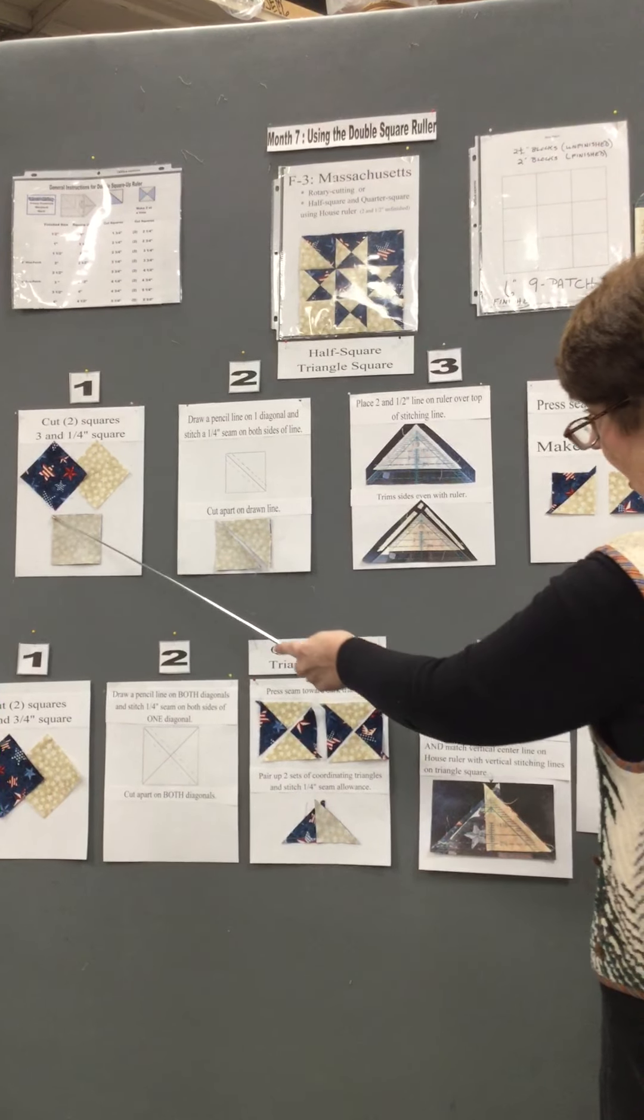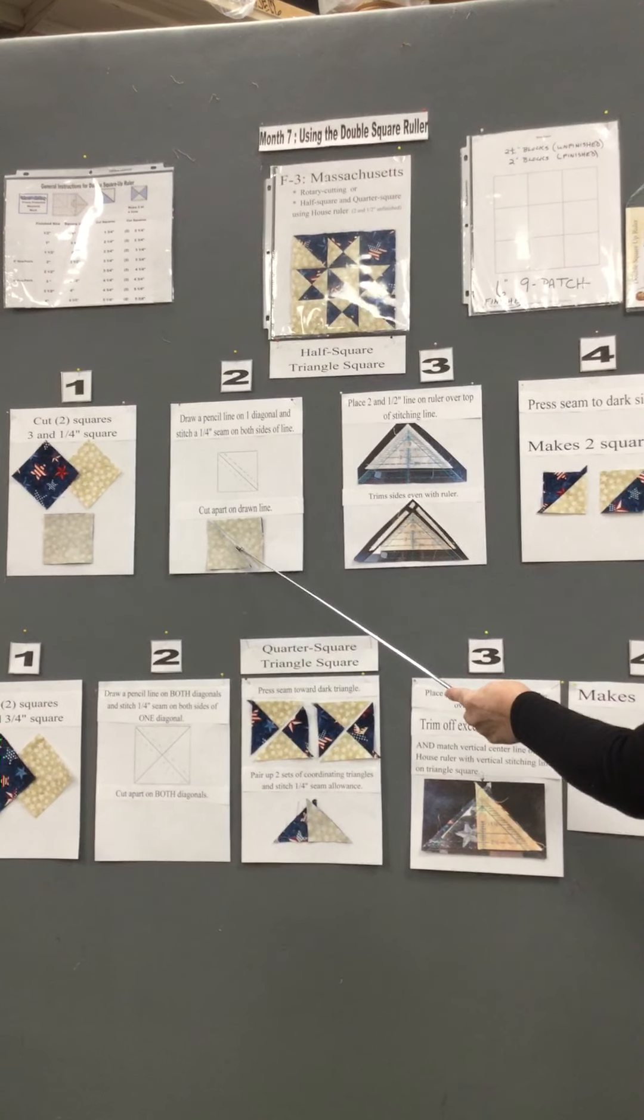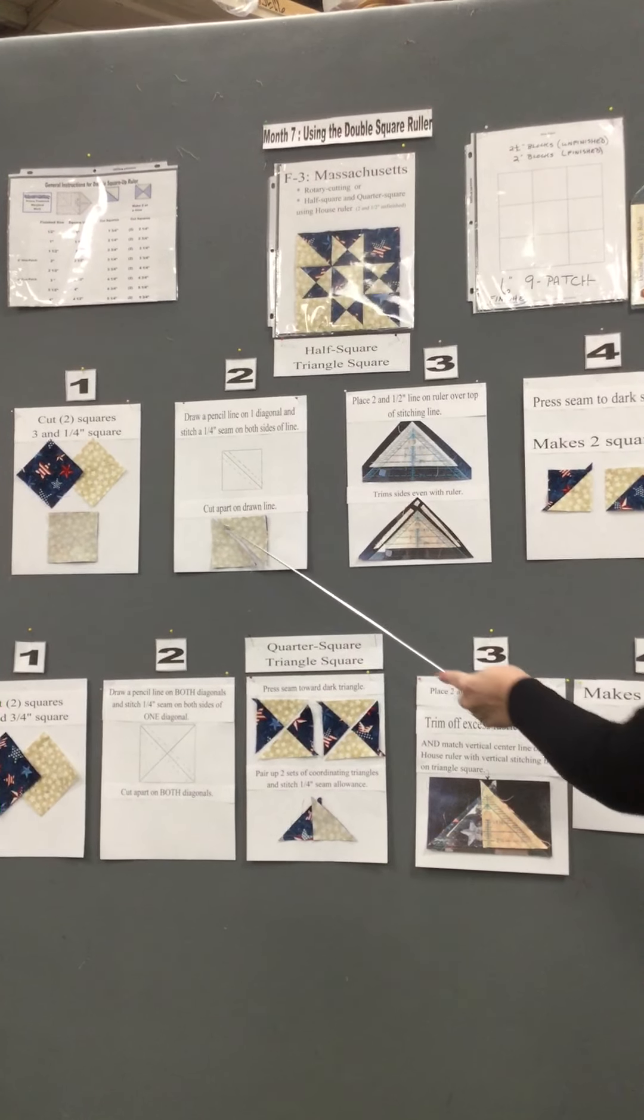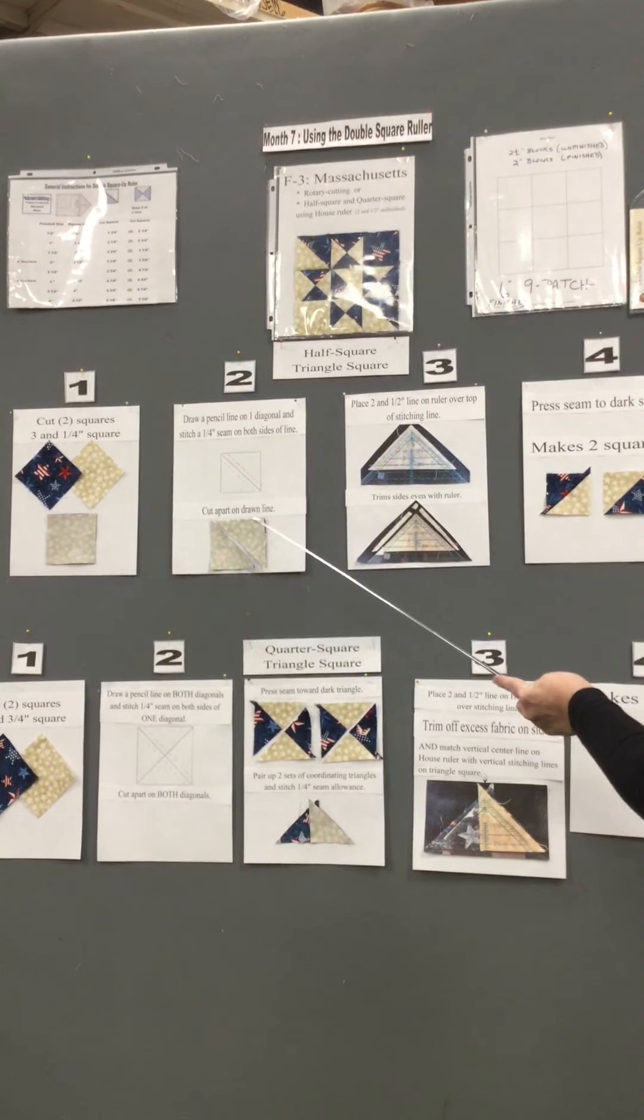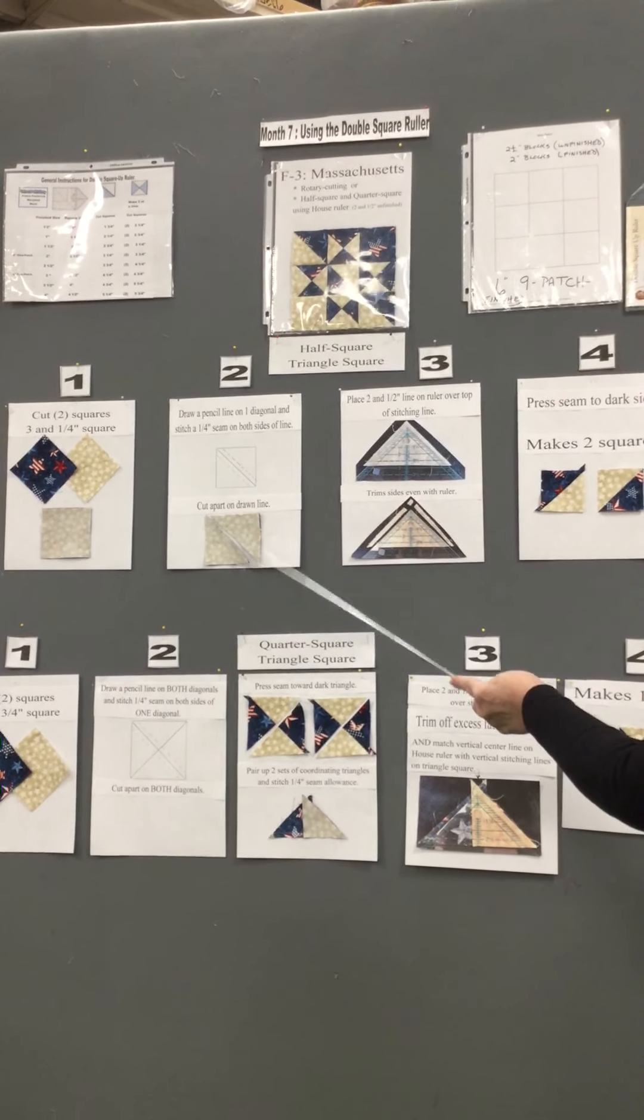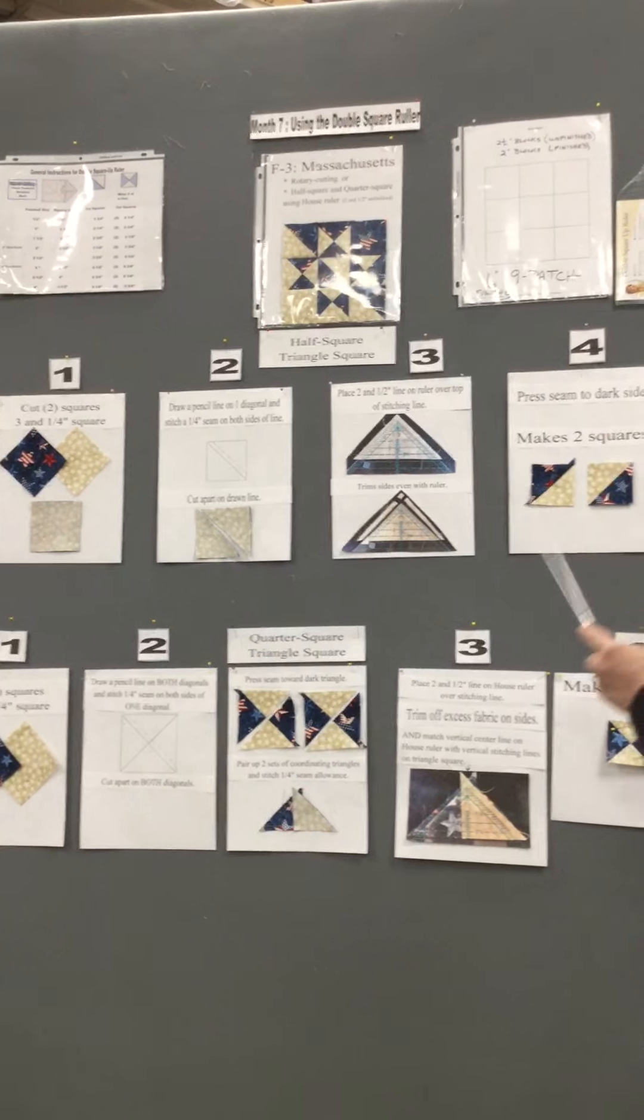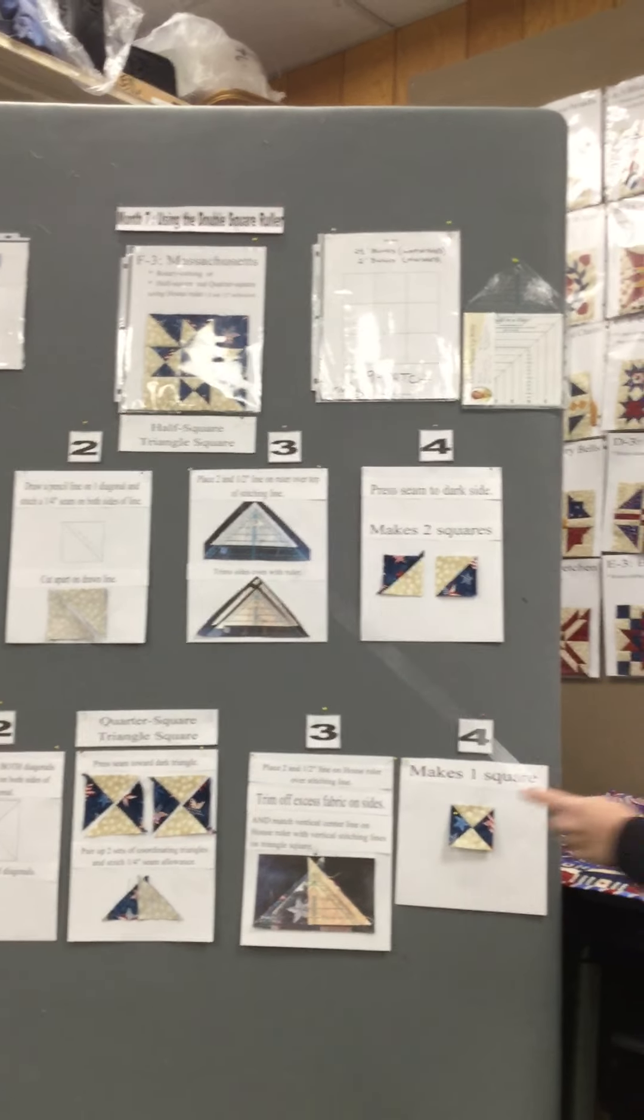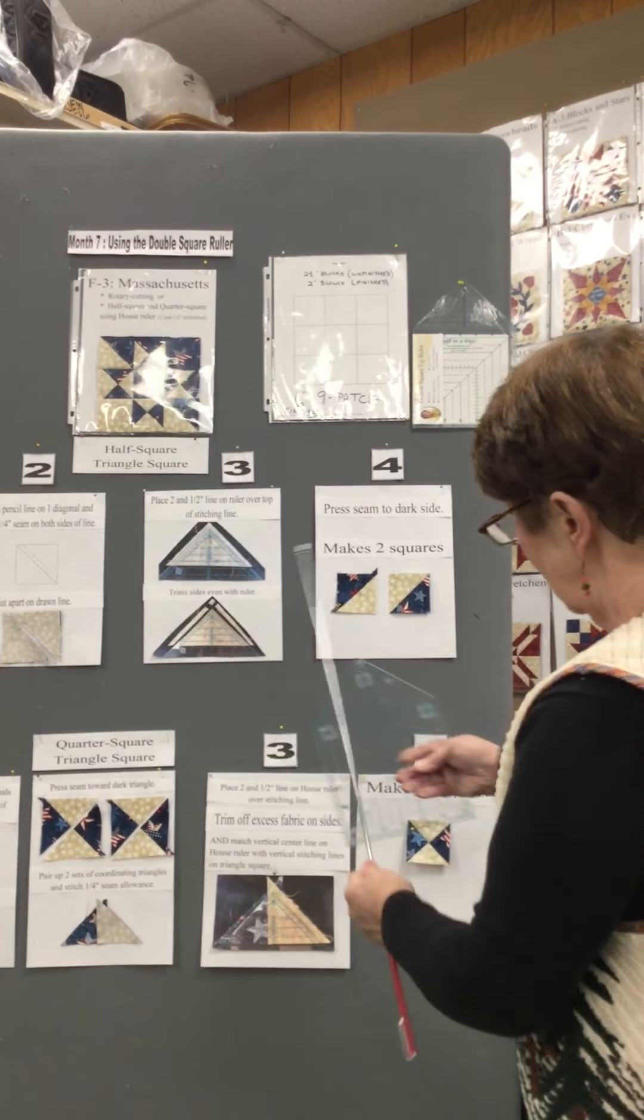Draw a line on one diagonal, sew a quarter inch to each side of that, cut the line. Now at this point, normally what we used to do is we would open those up, press them, and then square them up to two and a half. What happens with the square up ruler is you keep them folded.